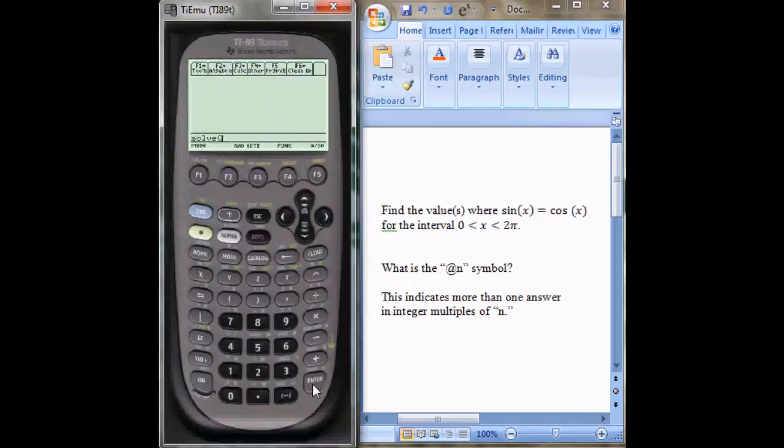Go to F2 solve, second sine x equal to cosine. Then you put a comma and what you're solving for is x. And then say enter.